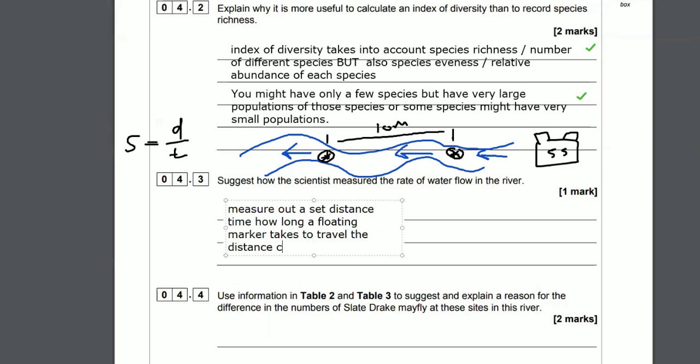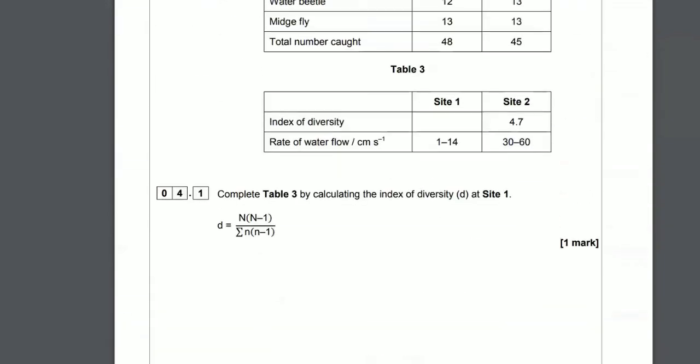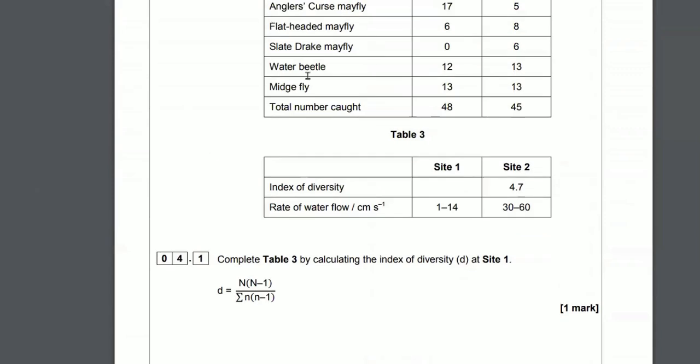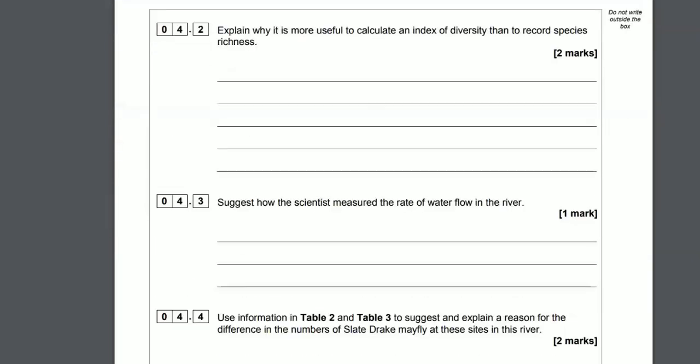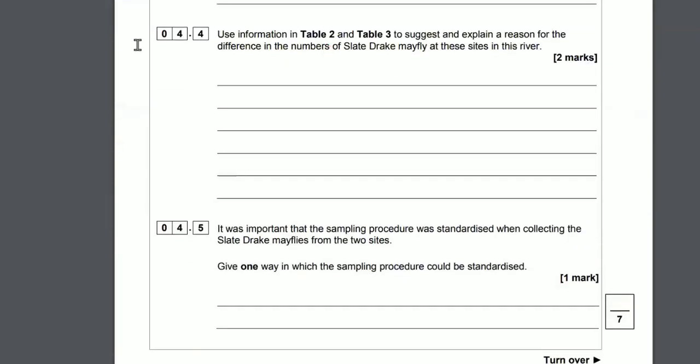There's the answer, guys. Obviously, it's best to pause the video before I start waffling out the answer, so you get a chance to write it down on scrap paper. Question 4.4: Use the information in table 2 and 3 to suggest and explain a reason for the difference in the number of slate drake mayfly at the two different sites. Site 1, we've got zero. Look here, we've got zero. So no slate drake mayfly found. At site 2, there were six. What could be the reasons? Look at the index of diversity. It's 4.7. We know site 1 was 3.8, so there's a higher index of diversity. How does that help the mayfly? There was also a faster flow of the river.